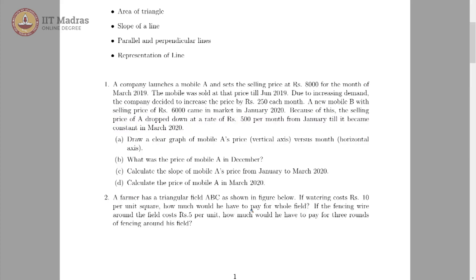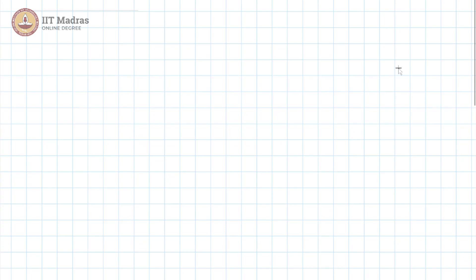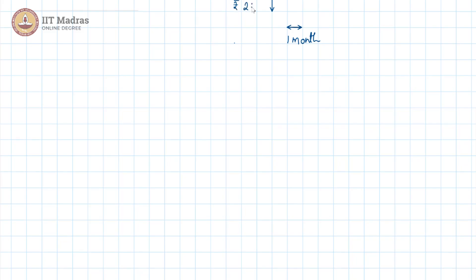We are expected to demonstrate a clear graph of this. What we need to realize about situations like this is the x and y axes do not necessarily represent the same units. Along the x axis, one unit is one month. However, along the y axis, one unit is 250 rupees. One month and 250 rupees are not the same thing, so please remember this.